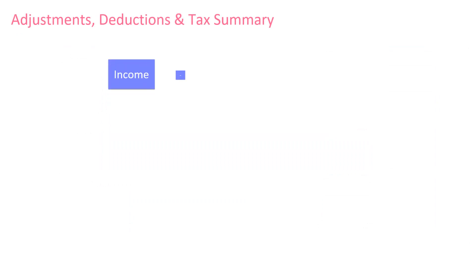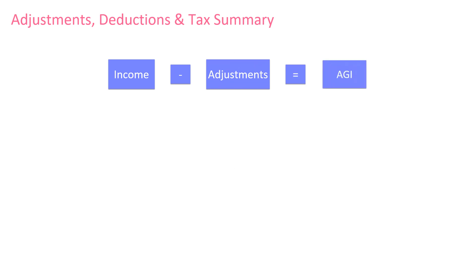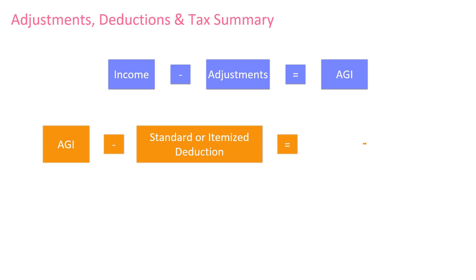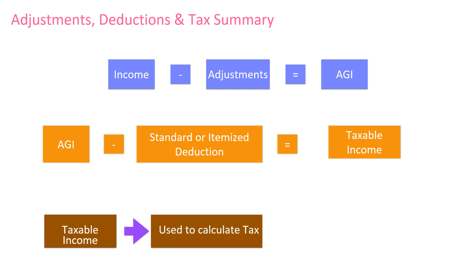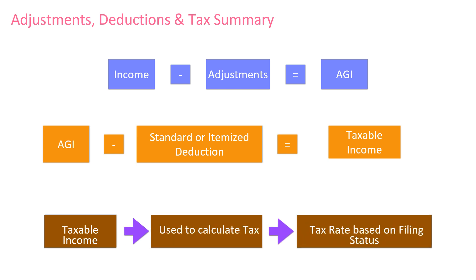In this lesson, you learned that income minus adjustments equals adjusted gross income or AGI. AGI minus the standard or itemized deduction equals taxable income. And taxable income is used to calculate tax, and the tax rate is based on your filing status. Don't worry if you're still a little confused — this will all become more clear as you continue training and get more experience preparing returns.